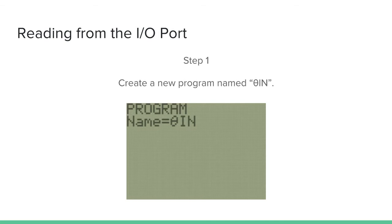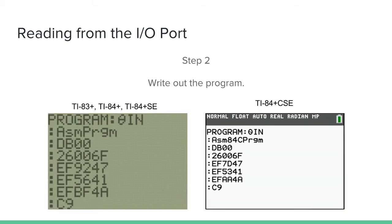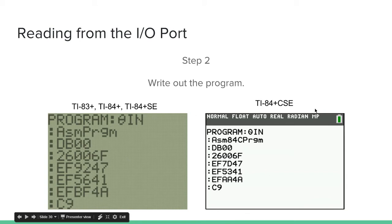Step one: create a new program named Theta N. Write out the program. As you can see there are two different codes here — make sure you write the codes for the right calculator. I have the calculator listed here for each code.